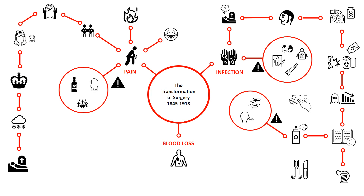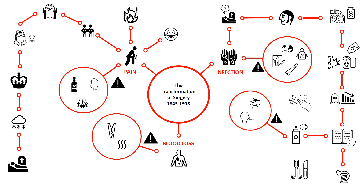Bleeding makes it difficult for the surgeon to see what he is doing, and there is also the problem that if a patient loses too much blood, his blood pressure drops, affecting his heart, and his body cannot function and he dies. In the theatre and on the battlefield, methods such as clamping, ligature and tourniquets have been used. Ambrose Paré used ligatures to tie off blood vessels, but they tended to get infected because they weren't sterilised. Cauterisation — using a hot iron to burn the wound — was also widely used. It was very painful and the resulting burns caused tissue damage, but it could be done rapidly on the battlefield.